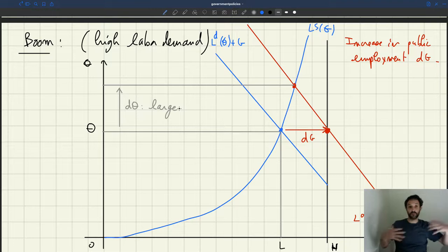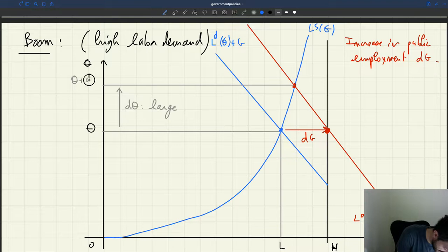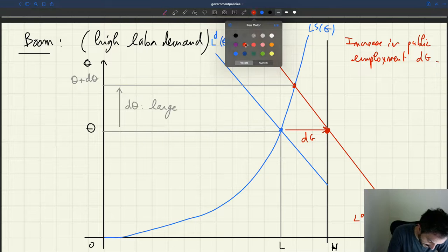So D theta here is quite large just because the labor supply is so steep. Okay. So in equilibrium, we have, now we're in a part where you really have to increase tightness in equilibrium. Here we have theta plus D theta. Okay. And so as a result, the crowding out that we have is going to be quite large.